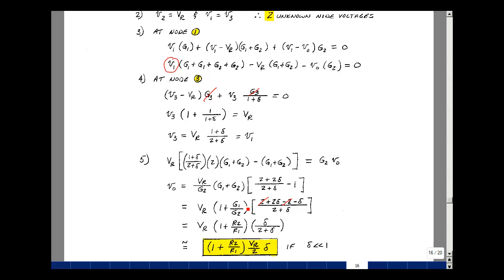I could write this as R2 over R1. And then here I've got 2 delta minus delta, which is delta, over 2 plus delta.